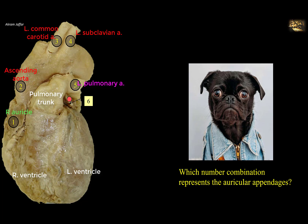The left atrium forms the posterior chamber of the heart and most of it is not seen in this view. But its auricular appendage, labeled 6, can be seen on the left border of the heart between the left ventricle and the pulmonary trunk. Note that both auricles, 1 and 6 — right auricle and left auricle — clasp the infundibulum of the right ventricle, the outflow tract of the right ventricle that leads into the pulmonary trunk. The combination, therefore, is 1 and 6.